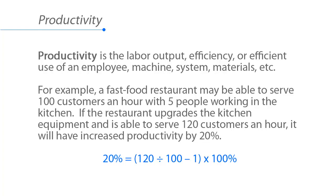For example, a fast food restaurant may be able to serve 100 customers an hour with 5 people working in the kitchen. If the restaurant upgrades the kitchen equipment and is able to serve 120 customers an hour, it will have increased productivity by 20%. That's calculated by taking 120, divided by 100, then subtracting 1, and then multiplying that all by 100%.